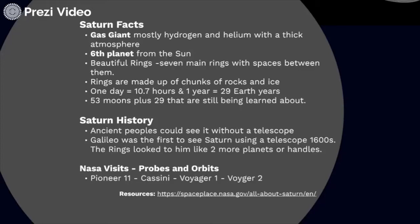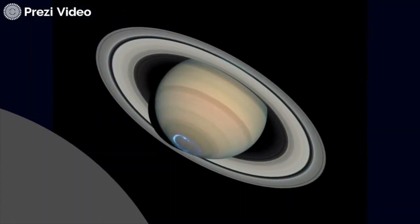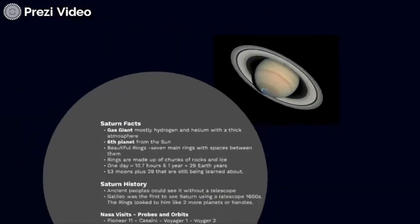NASA has sent lots of probes and orbits to Saturn. Pioneer 11, Cassini, Voyager 1, and Voyager 2 have all gone and orbited and taken pictures. Here's Saturn — those rings just really stand out incredibly. If you want to go to the NASA site listed on our page, you can see lots more photos of Saturn and learn more about the visits we have sent there.